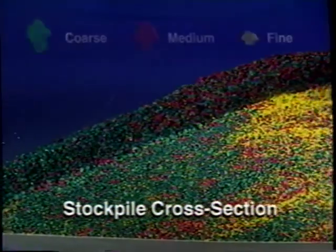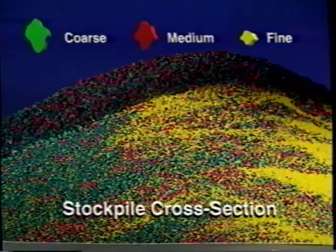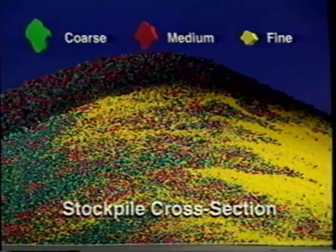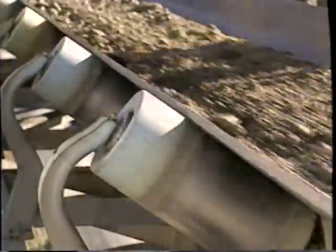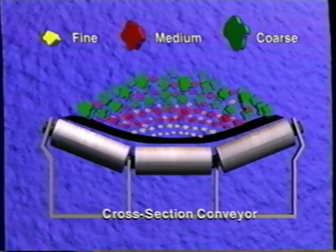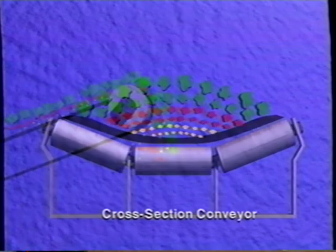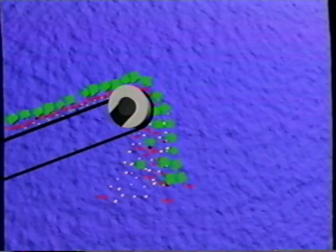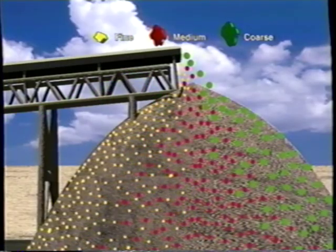And no matter how a stockpile is constructed, the possibility of segregation must be considered. For instance, if you take a close look at a stockpile that is built from a fixed conveyor, you'll notice that fine materials tend to sink to the bottom as it moves along the conveyor belt. As a result, the fine material drops directly down the conveyor to the inside of a stockpile. Larger material, on the other hand, is projected away from the conveyor to the outside of a stockpile.